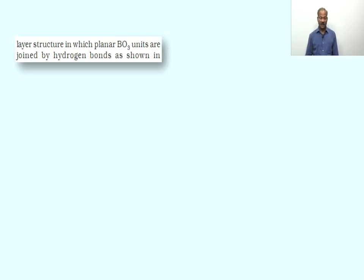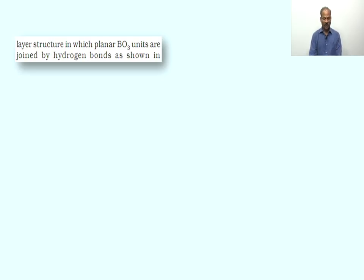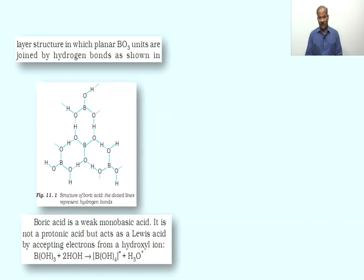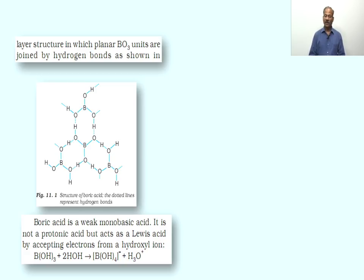The structure of boric acid is a layer type structure in which planar BO₃ units are joined through hydrogen bonding. It is a layer type structure involving hydrogen bonding, as visible in the diagram. A question can be asked: which of the following involves hydrogen bonding — so layer structure with hydrogen bonding is the answer. Boric acid is a monobasic acid, but it is not a protonic acid because when dissolved in water, it does not ionize to produce H⁺ ions. It behaves as a Lewis acid by accepting an electron pair from the hydroxyl group of water, releasing H⁺ from water as shown in the reaction.